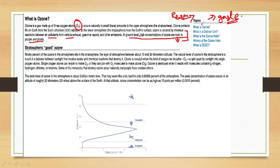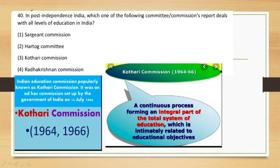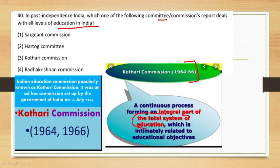Question number 40: In post-independence India, which committee or commission's report dealt with all levels of education? Basically, the Kothari Commission of 1964-66 was the commission established for all levels of education — a continuous process forming an integral part of the total system of education, which is intimately related to educational objectives. The Kothari Commission was set up on 14th July 1964.